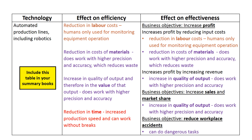All I've done in this table is take the relevant advantages of automated production lines and robotics from the previous slide, still colour coded, and relate them to both efficiency and effectiveness. By keeping the coloured wording, you only need to learn the information once to answer both evaluation questions and questions requiring you to justify automated production lines and robotics as ways of improving efficiency and effectiveness.